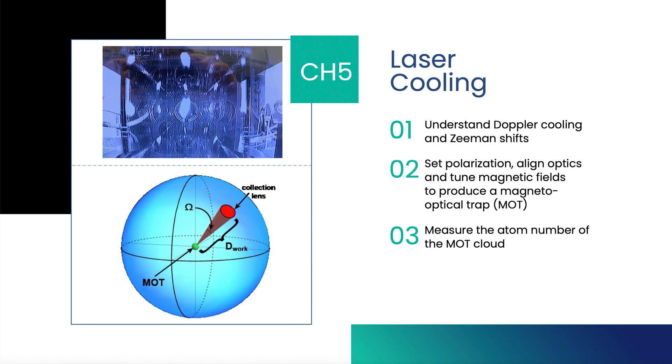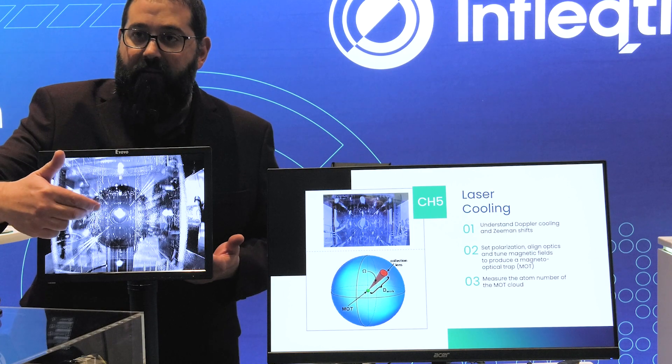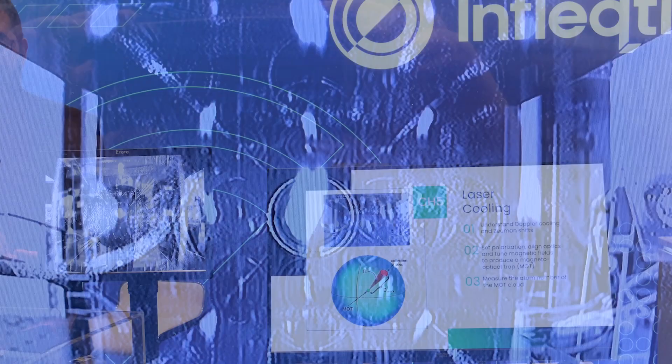What you're seeing on the screen here is a sample of laser-cooled atoms. This white ball in the middle of the screen is laser-cooled rubidium.